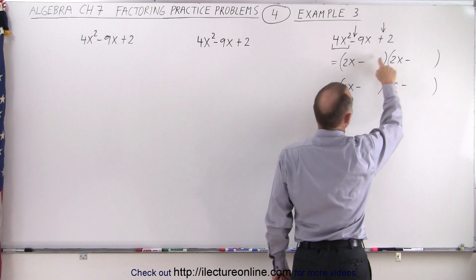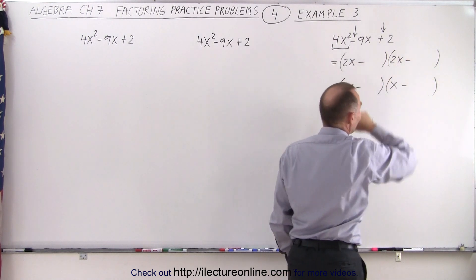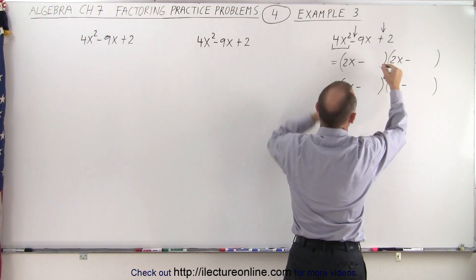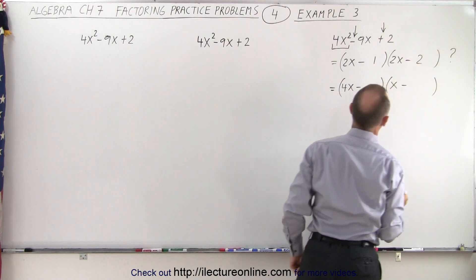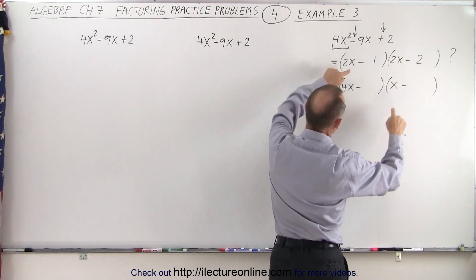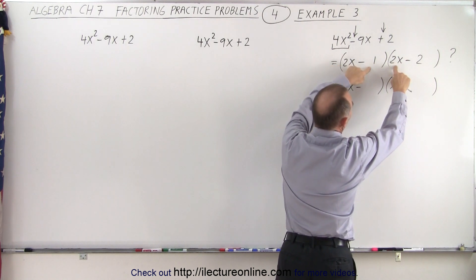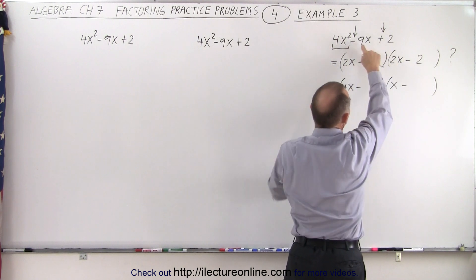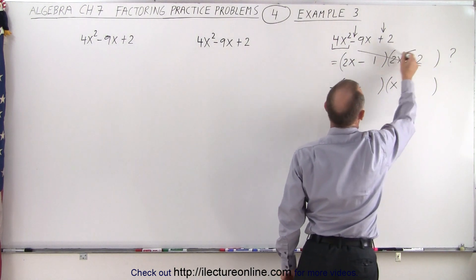We either write 1 here and a 2 there or a 2 there and a 1 there. But on the first example here, it doesn't really matter because the first two terms are the same. So let's go ahead and plug that in and see if that is the right solution. Notice when we multiply these two terms together, we get minus 4x. Multiply these two terms together, we get minus 2x. That doesn't add up to minus 9x, so this is not a solution.